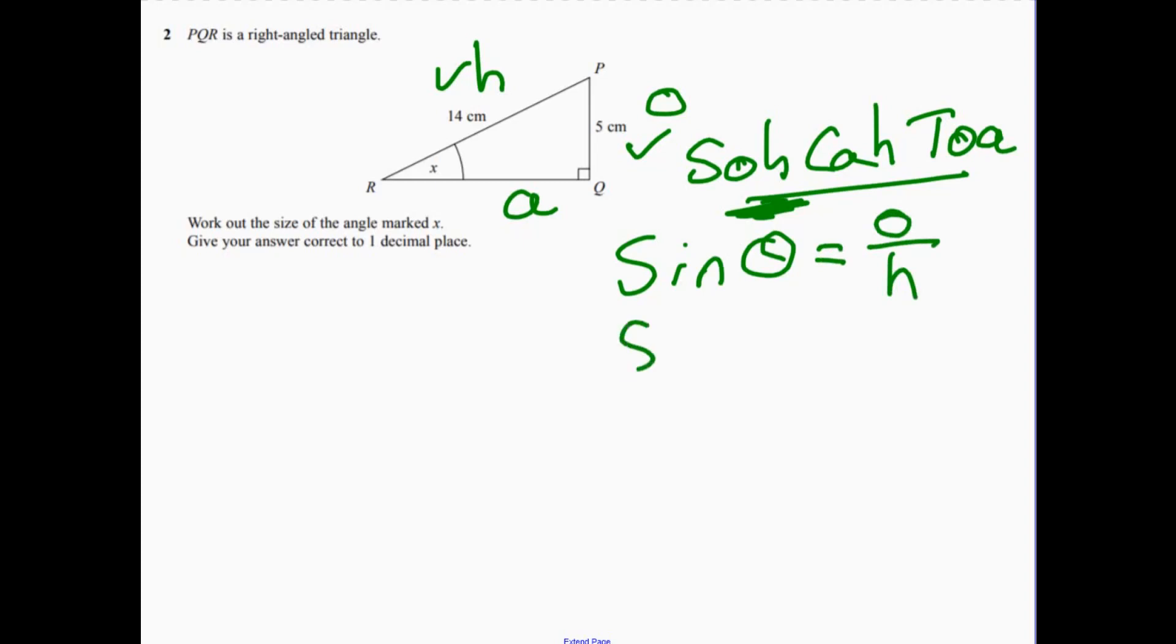So the sine of X, or theta if you want to keep calling it that, is equal to 5 over 14. So X will equal, on your calculator, the inverse sine of 5 over 14.